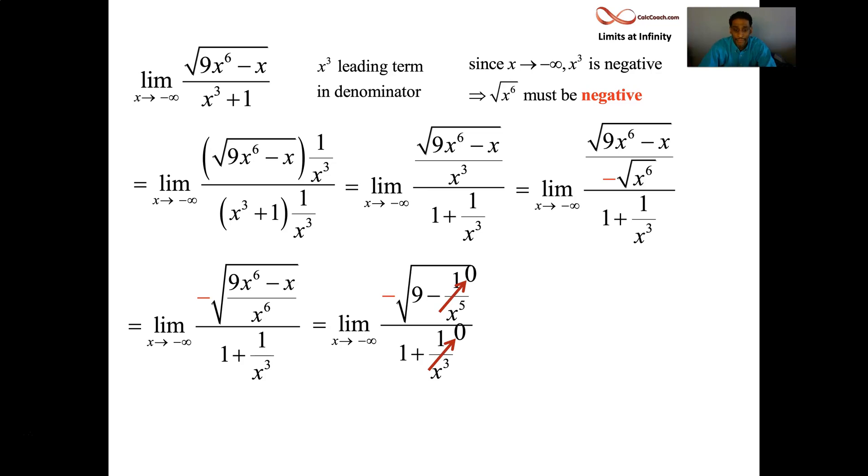And what are you left with? The square root of nine. Three, but negative three. Denominator one. The answer is negative three. Okay.